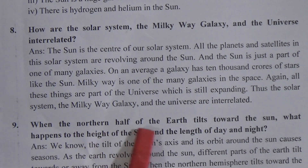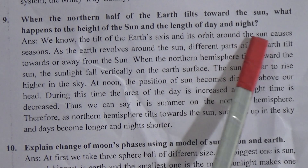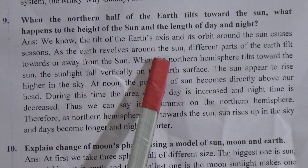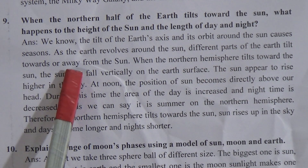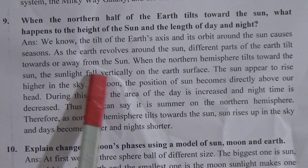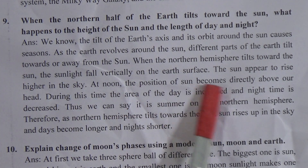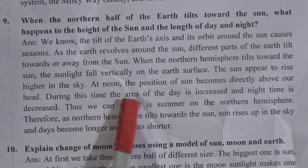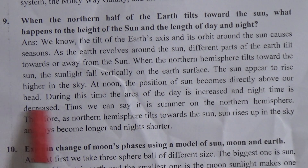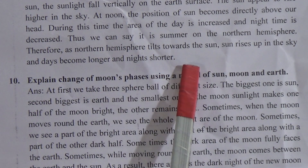Come to the next question: when the northern half of the earth tilts towards the sun, what happens to the height of the sun and the length of the day and night? The tilt of the earth's axis and its orbit around the sun causes seasons. As the earth revolves around the sun, different parts of the earth tilt towards or away from the sun. When the northern hemisphere tilts towards the sun, sunlight falls vertically on the earth's surface. The sun appears to rise higher in the sky; at noon, the position of the sun becomes directly above our head. During this time, the length of the day is increased and the night time is decreased. Thus it is summer in the northern hemisphere, the sun rises up in the sky, and days become longer and nights shorter.